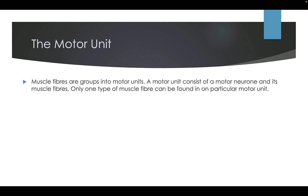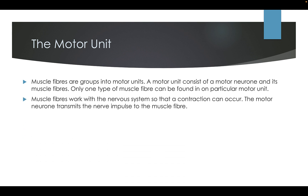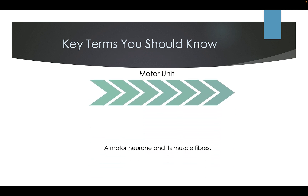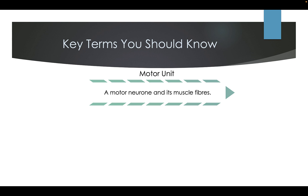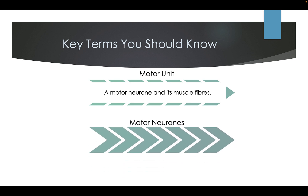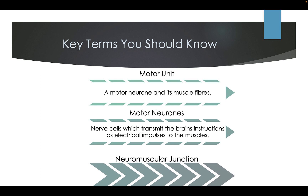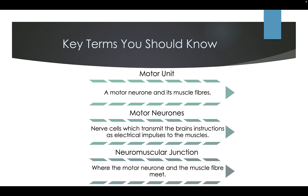Within the muscle fibres, these are broken down into motor units — so muscle fibres are grouped into motor units. A motor unit consists of a motor neuron and its muscle fibres. Only one type of muscle fibre can be found in a particular motor unit. The motor neuron transmits the nerve impulse to the muscle fibre from the brain, meeting the muscle fibre at the neuromuscular junction. Key terms: motor unit — a motor neuron and its muscle fibres; motor neurons — nerve cells which transmit the brain's instructions as electrical impulses to the muscles; neuromuscular junction — where the motor neuron and the muscle fibres meet.